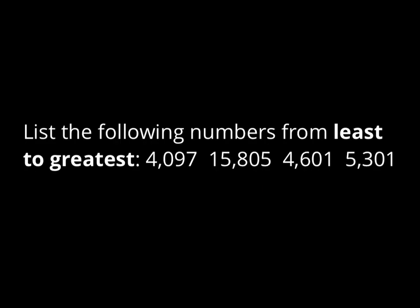Are you ready? Let's try some problems at home! Here are some problems to try — listing the following four numbers from least to greatest. Be careful, because one of them has more digits than the rest. That's going to tell you something about it — if it has more digits, it's got to be bigger. Go ahead and give this one a try. Line them up in their places if you want, and if you do, make sure you line up the four and the five in the same place, because they're both thousands.